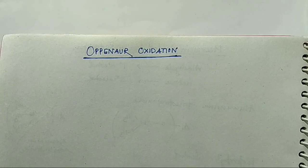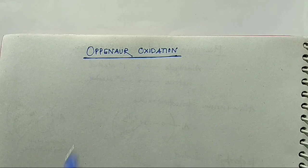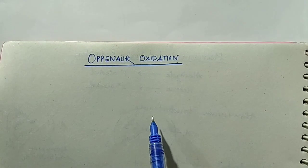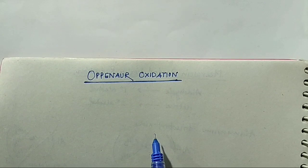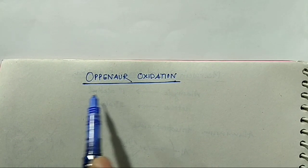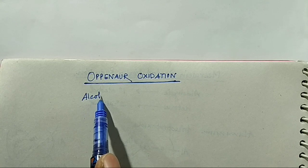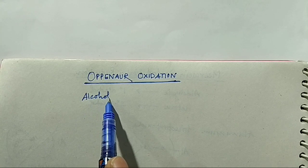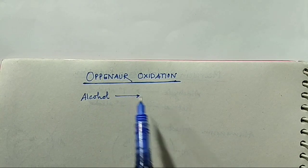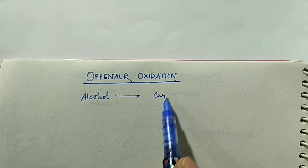We will start Oppenauer Oxidation. Oppenauer Oxidation is just the reverse of Meerwein-Ponndorf-Verley Reduction. In Meerwein-Ponndorf-Verley Reduction, we convert a carbonyl compound into alcohol. Here in Oppenauer Oxidation, we convert alcohol into a carbonyl compound.